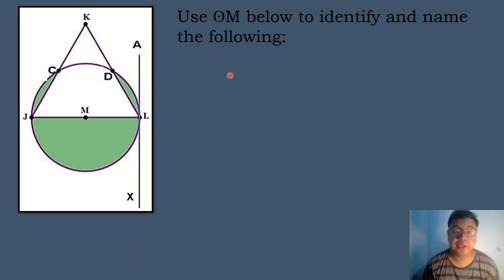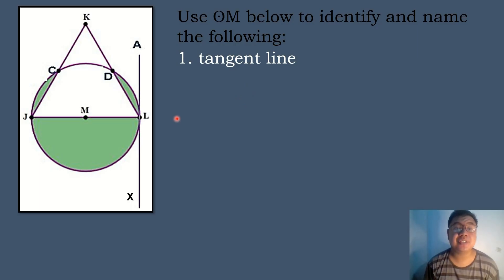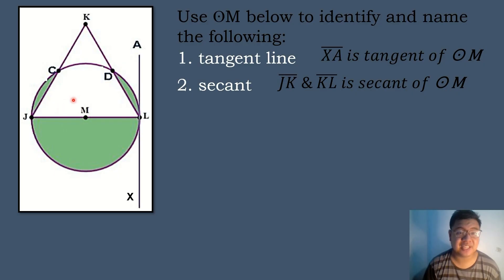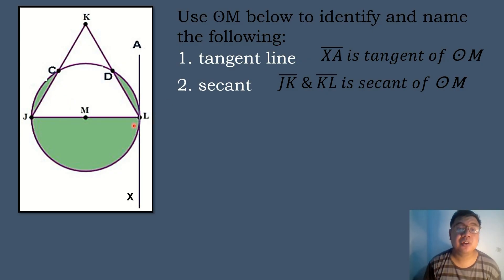Let's have our next example. Use circle M below to identify and name the following. Number one, the tangent line — we have line segment XA as the tangent of circle M. Next, the secant line intersects the circle at exactly two points and contains a chord. We have two secants: line JK and line KL, because they intersect the circle at exactly two points and contain chords — chord JC is part of secant JK, and chord LD is part of secant KL.